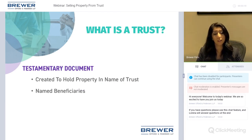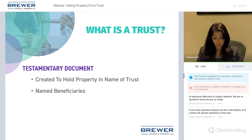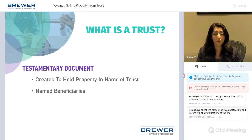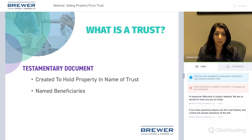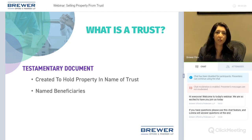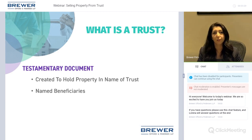A trust is a document created by a person or persons — so an individual or a married couple — to hold certain property in the name of the trust for their benefit or for the benefit of others, known as beneficiaries.